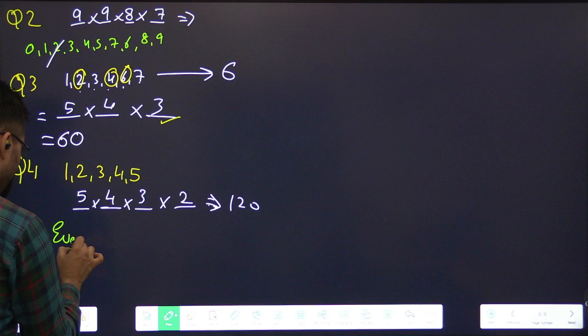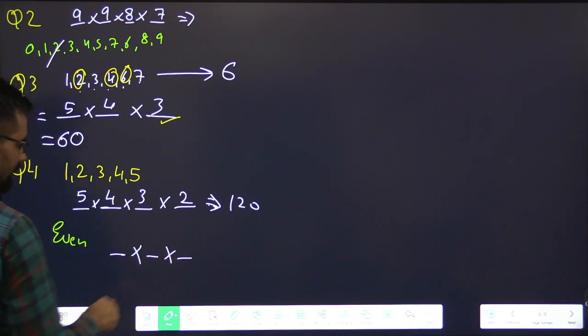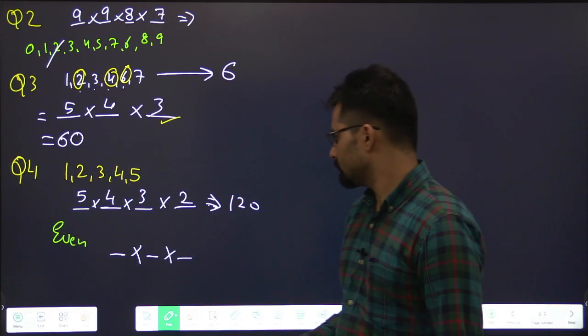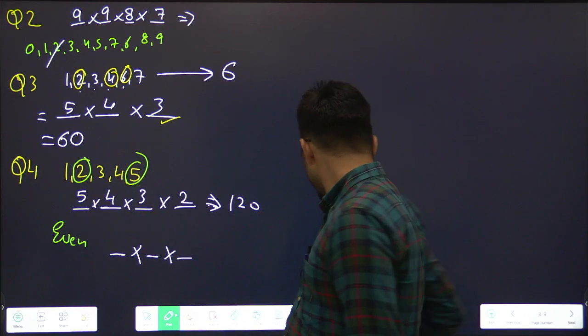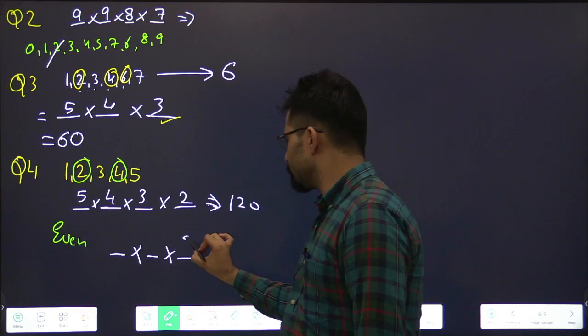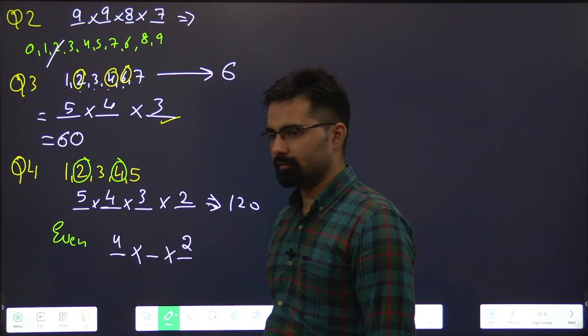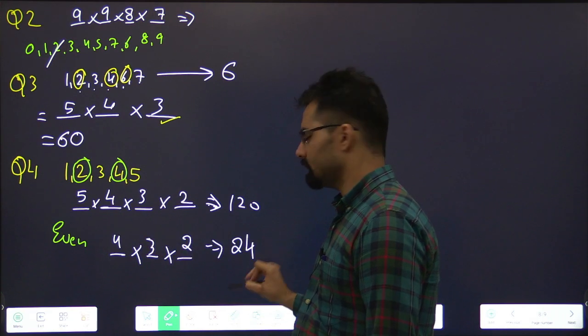120 total. But now the question has asked something more. What has it asked, tell me? How many of these will be even? How many will be even? How to do it? Now for even? 1, 2, 3. How many of these are even, tell me? For last how many options do I have? 2 or 4. That is 2. For next? 4, then 3, then 2. 4×3×2 is 24. That's it. Clear?